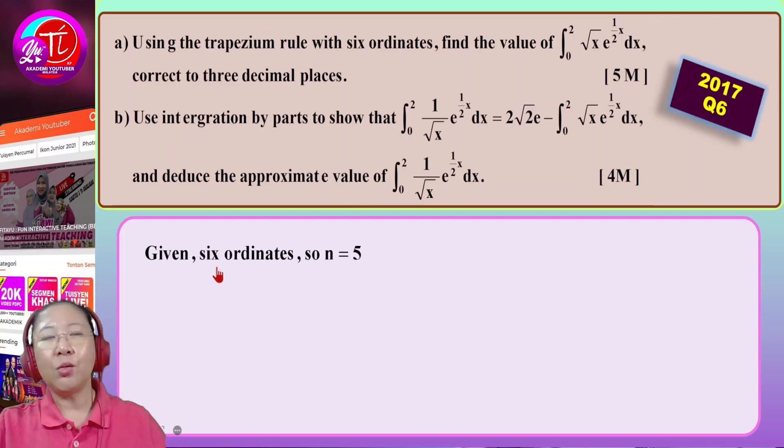So the first thing is you need to know they gave you six ordinates. So you have to know that actually the n is five. So you will write this out. This you now I mentioned already is inside the question. Two is from the element that they gave you here. Two minus zero is the second element they gave you here. And then divided by the n, and n is from how many ordinates they gave. So you have six ordinates. Therefore the n is five.